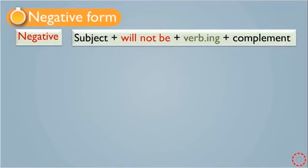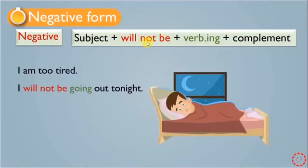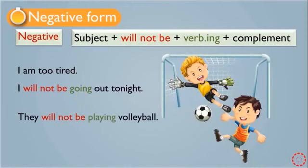Now, how can we negate the Future Continuous? This is the negative form: we have the subject at the beginning, and then we change 'will be' by adding 'not' — we say 'will not be'. After 'will not be', we also have verb+ing and then the complement. For example: 'I will not be getting out tonight.' Another example: 'They will not be playing volleyball.' This is Future Continuous in the negative form.